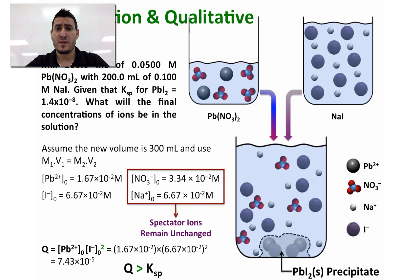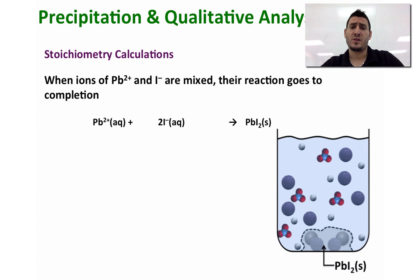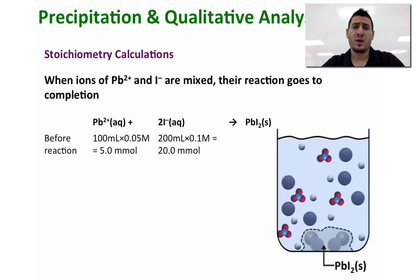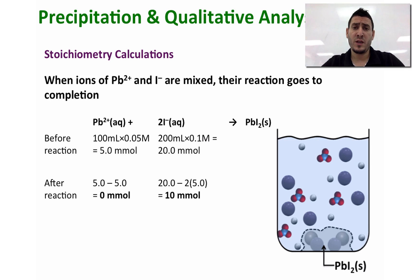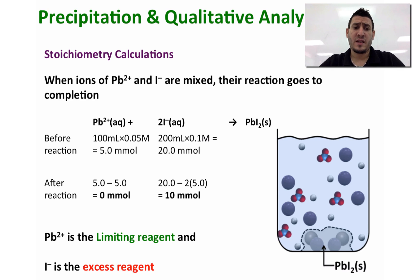Since Q > Ksp, the concentrations of I⁻ and Pb²⁺ have changed. To find this change, we look at stoichiometric calculations. Initially we had 5 mmol of lead and 20 mmol of iodide. From the balanced equation, every 1 mole of lead reacts with 2 moles of iodide. After the reaction, all 5 mmol of lead are consumed and 2 × 5 = 10 mmol of iodide are consumed, leaving 10 mmol of iodide remaining.